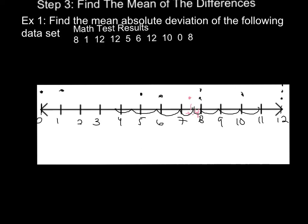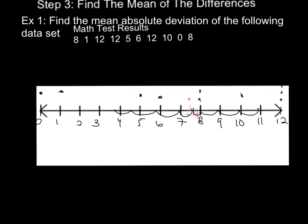So in this case we can say that our data points are pretty spread out. Considering that our range of data was only 12, right? The distance between 12 and 0 is only 12 points. So the fact that our mean absolute deviation is over 3.5 or 3 and a half away.